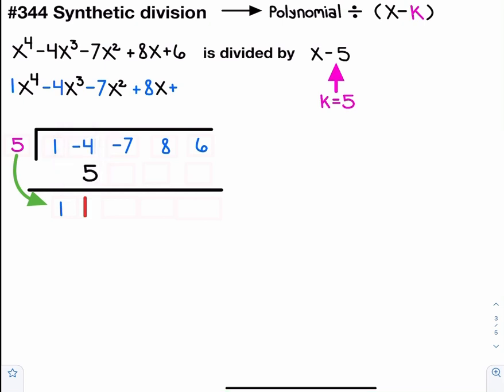And then we're going to multiply the number out front, that five, by our new number one. Five multiplied by one is five. Let's add those together. Negative seven plus five is negative two.